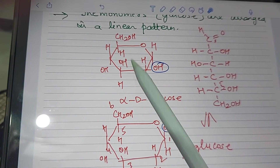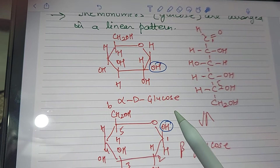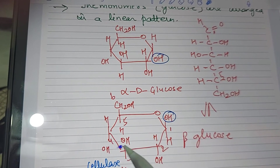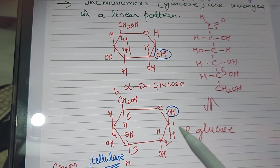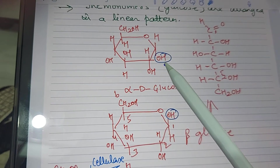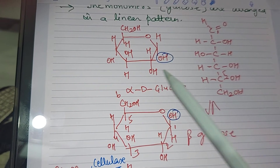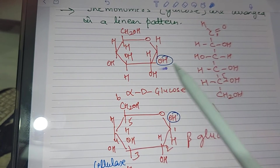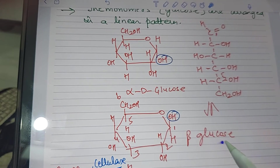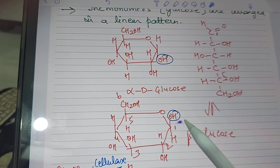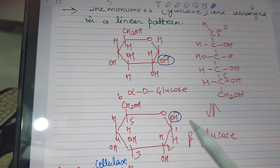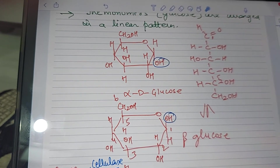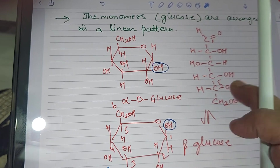Now if you see the difference between the beta and alpha structures, the first carbon's H and OH arrangements are different. In alpha-D-glucose, the OH is at the bottom. In beta-D-glucose, the OH is on the top. Coming back to disaccharides.